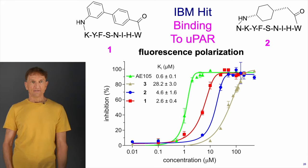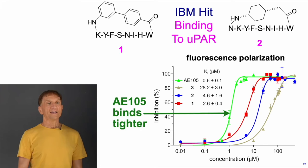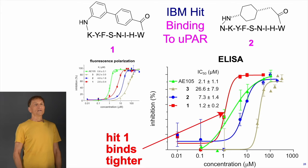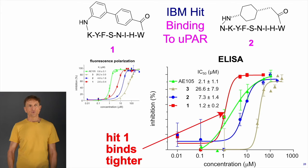You can see that the lowest in the series is AE105 — the best ligand — beating all three. But then we did an ELISA-based assay looking at the three analogs, and we got these data: in the ELISA screen, hit one binds marginally tighter than AE105, and both of those were better than two and three. On the basis of this we argue that hit one is probably comparable in binding to AE105.